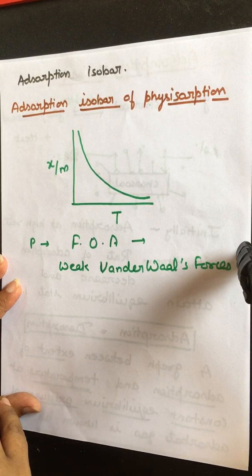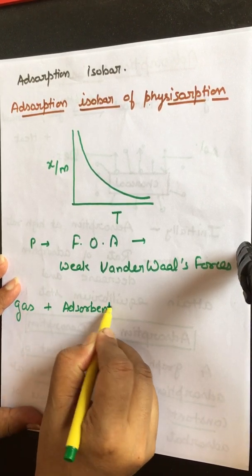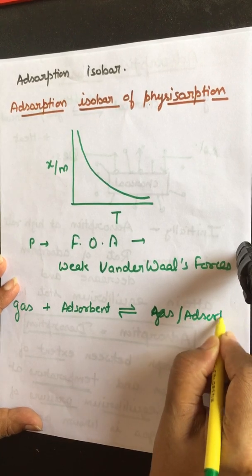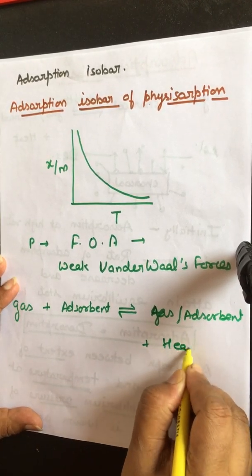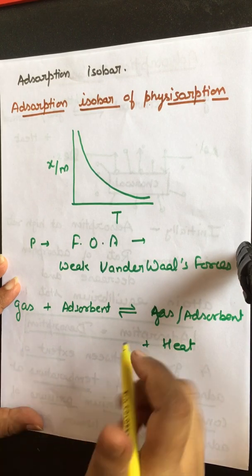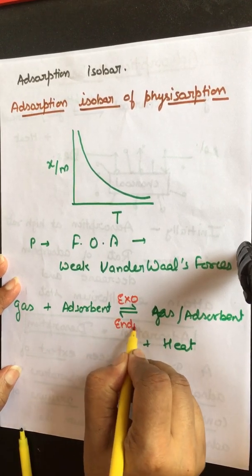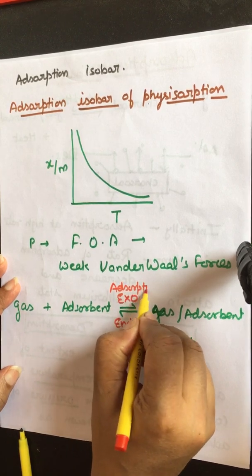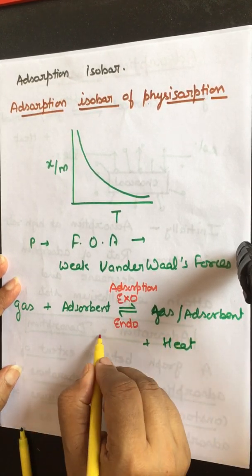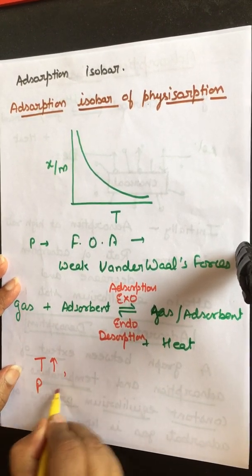There is no chemical bond. Because of these van der Waals forces, gas particles get adsorbed easily. The process is: gas + adsorbent gives adsorption, with evolution of heat. The forward process (adsorption) is exothermic and the backward process (desorption) is endothermic. So if we increase temperature by keeping pressure constant, this equilibrium is affected.